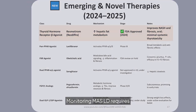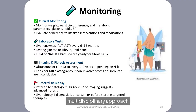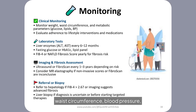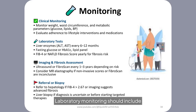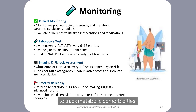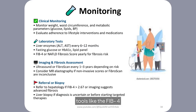Monitoring MASLD requires a structured, multidisciplinary approach combining clinical assessment, laboratory evaluation, and imaging to detect disease progression and guide timely intervention. Clinically, weight, waist circumference, blood pressure, and adherence to lifestyle changes should be assessed at regular visits. Laboratory monitoring should include liver enzymes (ALT, AST) every 6 to 12 months, along with HbA1c or fasting glucose and lipid panels to track metabolic comorbidities. Fibrosis risk should be evaluated annually using non-invasive tools like the FIB-4 index or NAFLD fibrosis score.